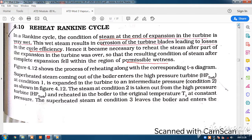In the Rankine cycle, the condition of steam at the end of expansion in the turbine is very wet. This wet steam results in corrosion of turbine blades, leading to loss in the cycle efficiency.